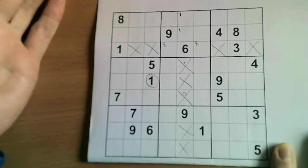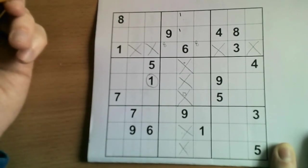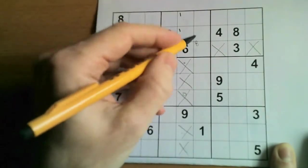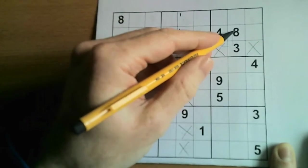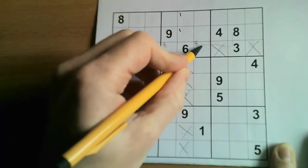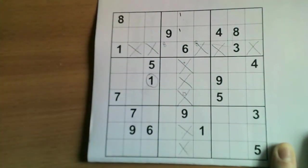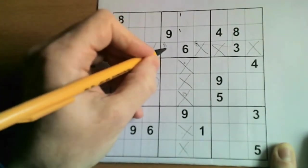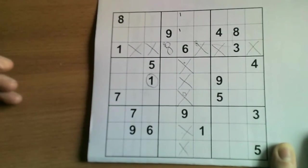But again, this isn't Standard Sudoku, it's an Anti-Knight Sudoku. So we can use that rule to help us place the eight. So this square here is a Knight's move away from this eight, and therefore that cannot be the eight. And we can place our eight here.